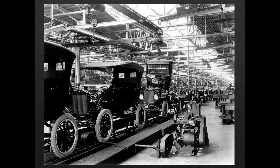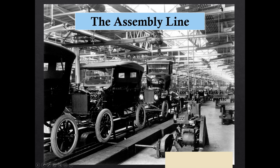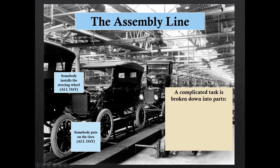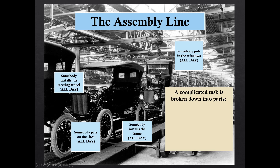The Model T is produced very quickly because of the assembly line. The assembly line is when we take a complicated task like building a car and break it down into different steps or parts. The assembly line has many people on it and each person does just one important task - one person installs the steering wheel, one puts on the tires, someone installs the frame, someone puts on the windows.